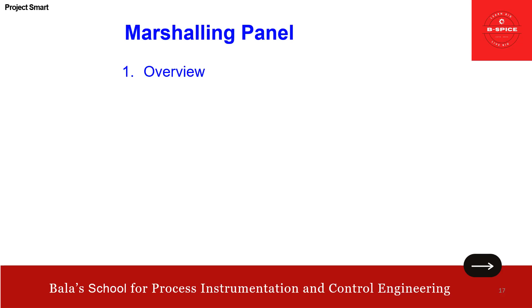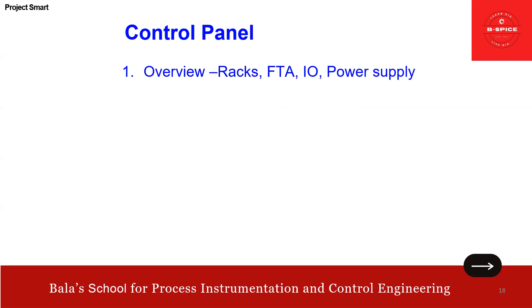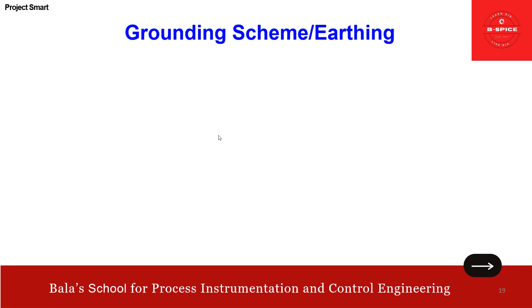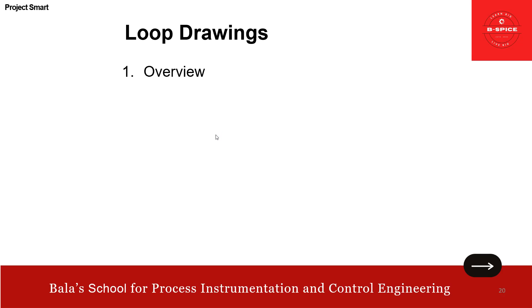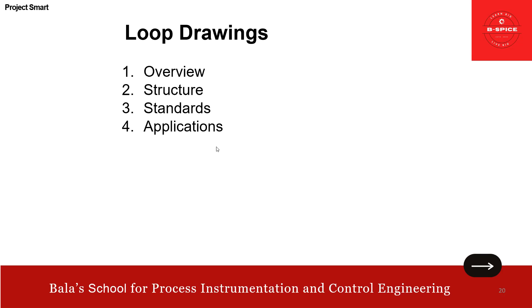Marshaling panel — we have already uploaded it in detail: overview, design spec, GA/IA, and BOM are all covered. Then control panel — overview, racks, FTA, IO, power supply, design spec, GA/IA, and BOM — all already covered. Grounding scheme is also covered. Loop drawing — overview, structure, look and feel, standards to be followed — we are going to cover along with application patterns and hands-on with previous projects.